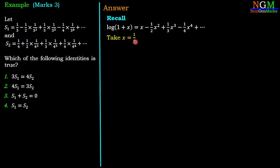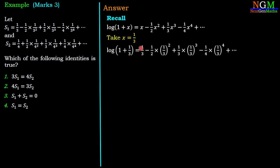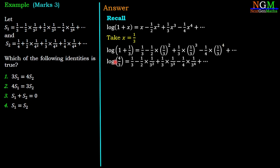Take x = 1/3. Then log(1 + 1/3) = 1/3 − 1/2 · (1/3)² + 1/3 · (1/3)³ − 1/4 · (1/3)⁴. Simplifying, log(4/3) = 1/3 − 1/2 · (1/3)² + 1/3 · (1/3)³ − 1/4 · (1/3)⁴, which is nothing but S1. Therefore log(4/3) = S1.